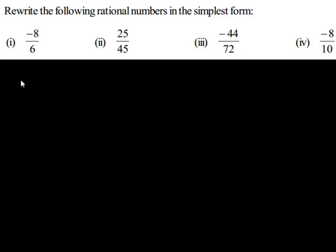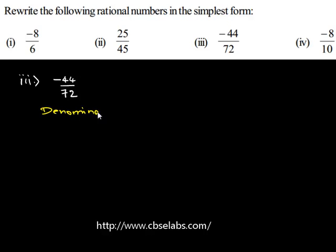The next question we have is negative 44 upon 72. In order to express the rational number in its simplest form, certain steps have to be followed. First, we have to see whether the denominator of the rational number is positive or not.